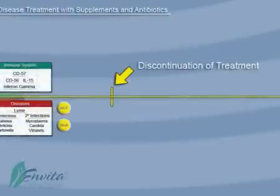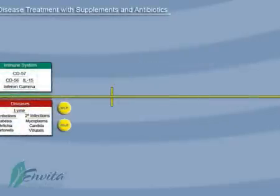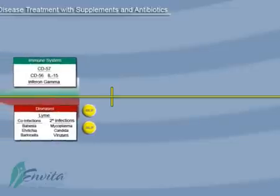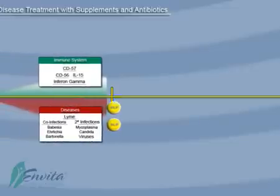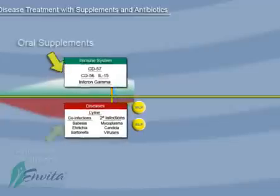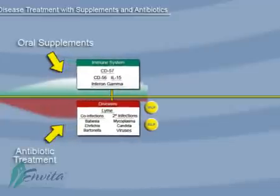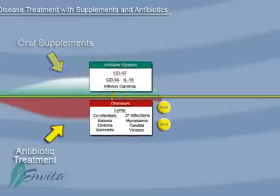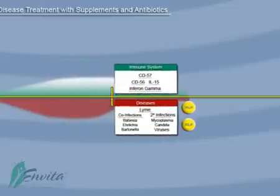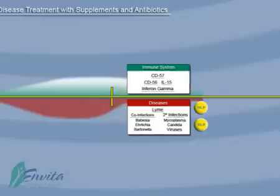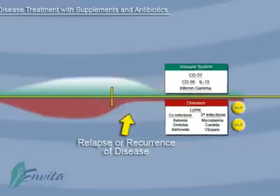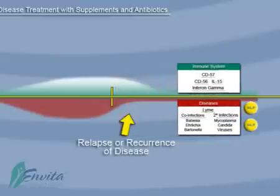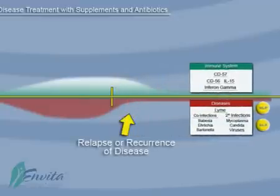In the second scenario, you'll see the patient is using IV antibiotics, dietary herbs and supplements. The IV antibiotics bring the infection down a little bit and the dietary herbs and supplements slightly increase the immune system. As in the first example, once the patient stops therapy, we see another relapse.